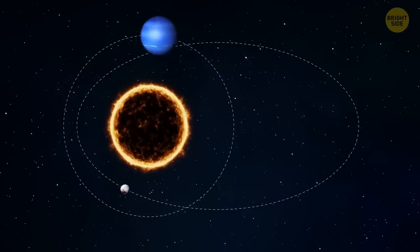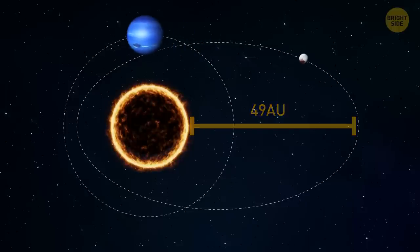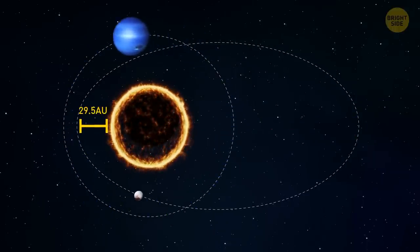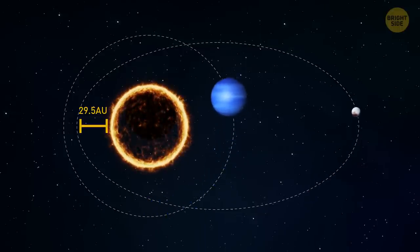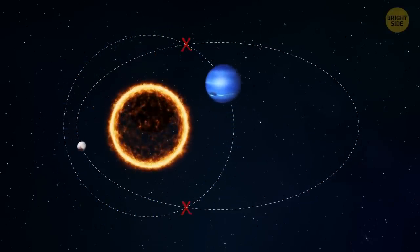At its furthest point, Pluto is 49 Earth-Sun distances away from the Sun. When it moves, it comes closer to the star. At its closest point, Pluto is about 29.5 AU from the Sun. That's closer than Neptune. So, hypothetically, they could collide.